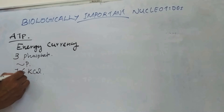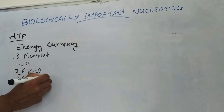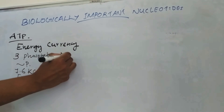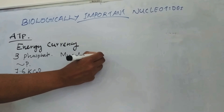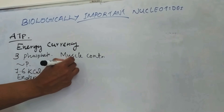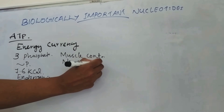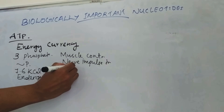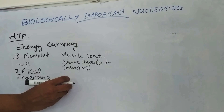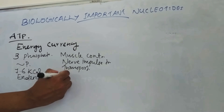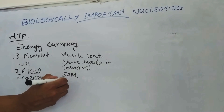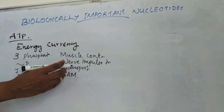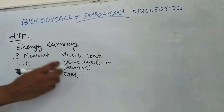This energy is utilized for endergonic processes. ATP is an important source of energy for muscle contraction, nerve impulse transmission, and transport of nutrients across the cell membrane. It is also required for the formation of active methionine, that is S-adenosyl methionine, which is a methyl carrier.